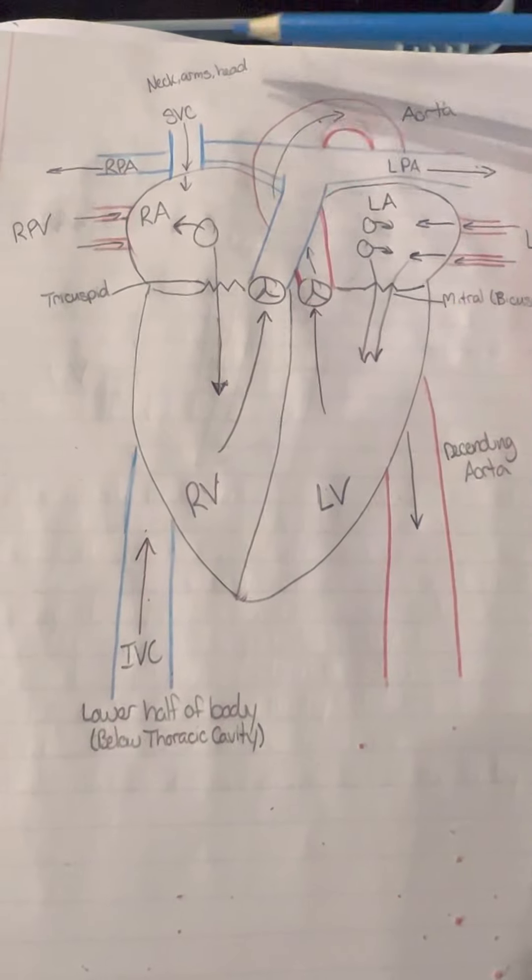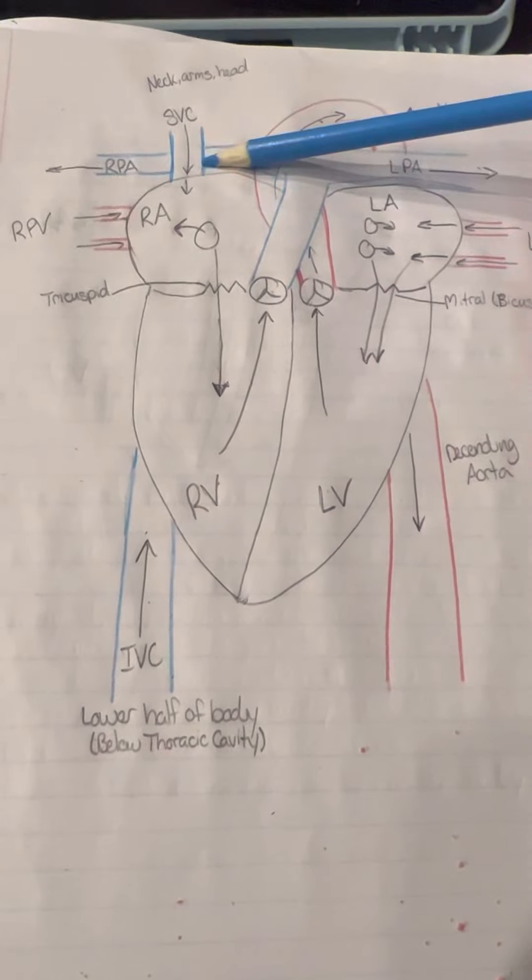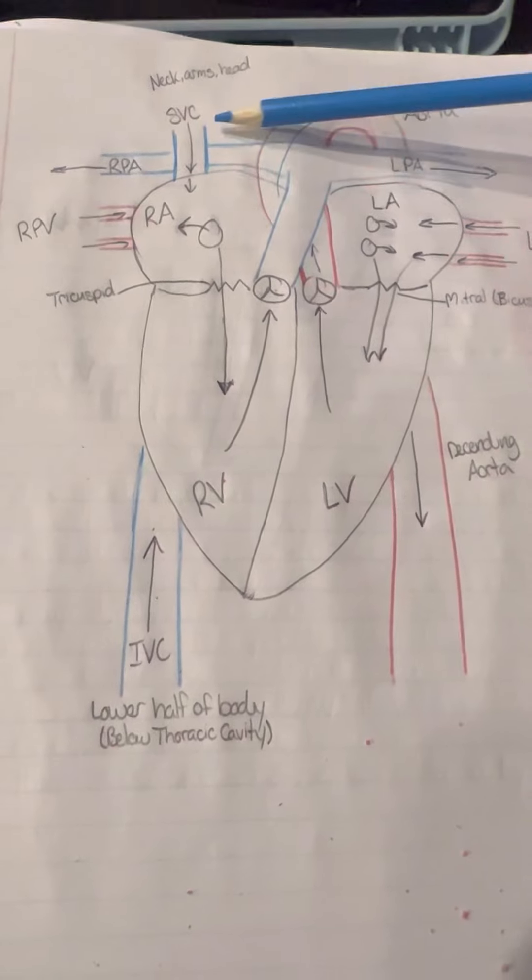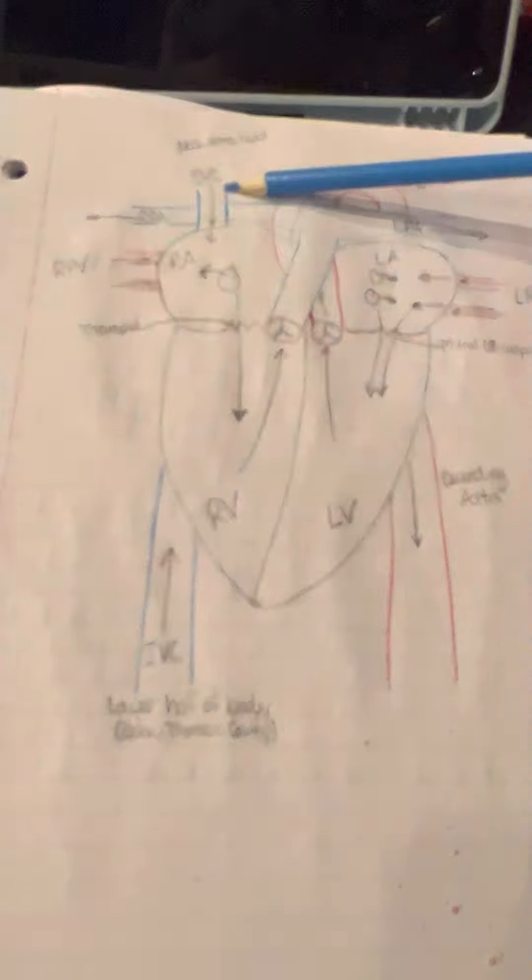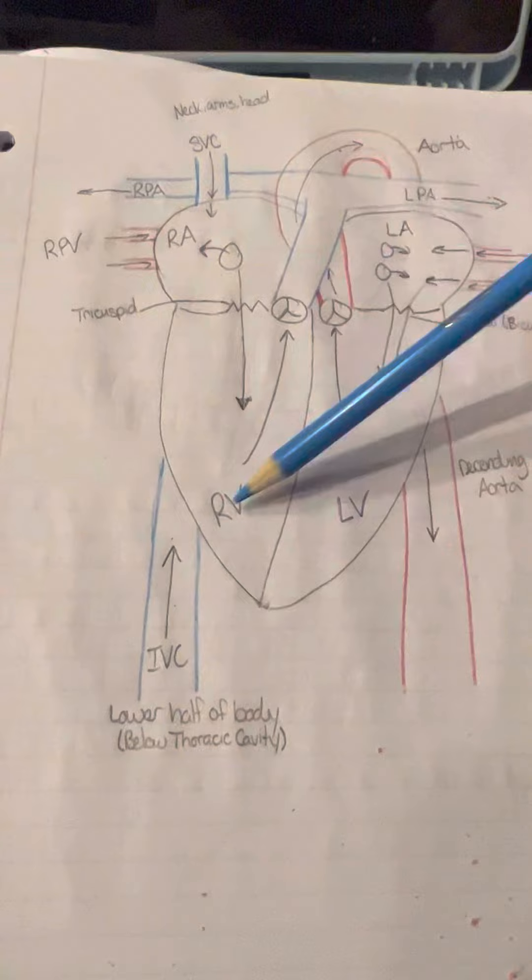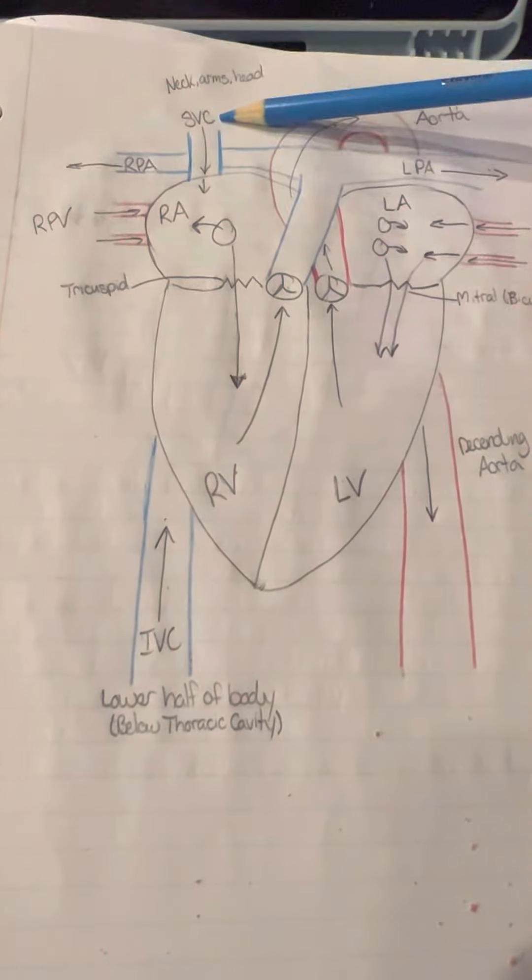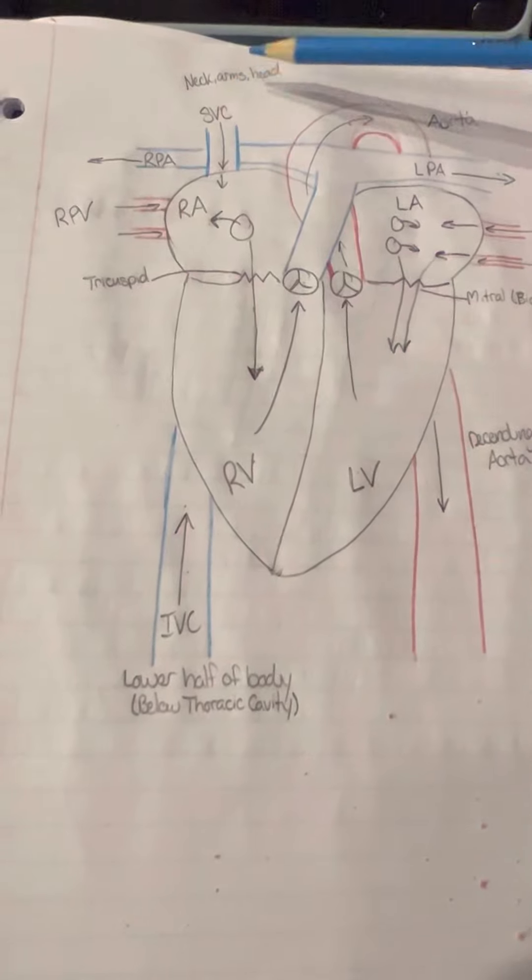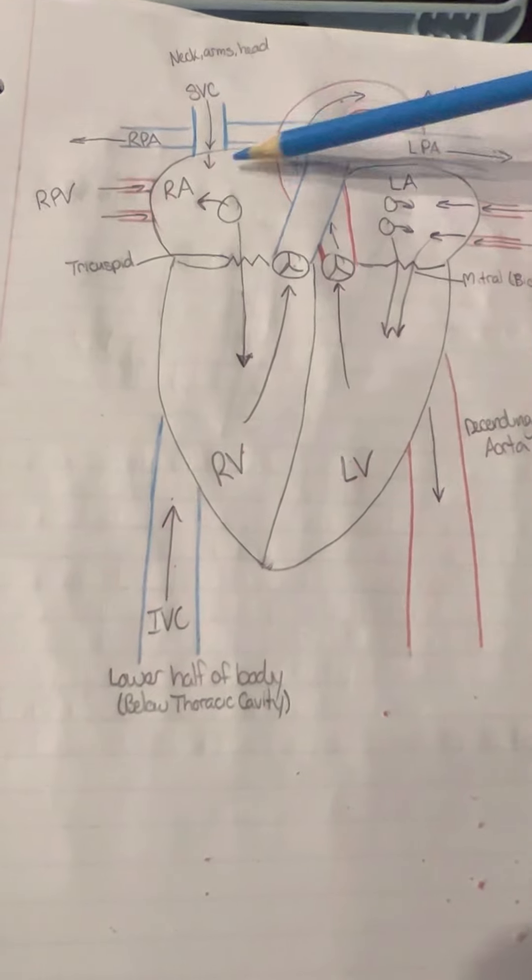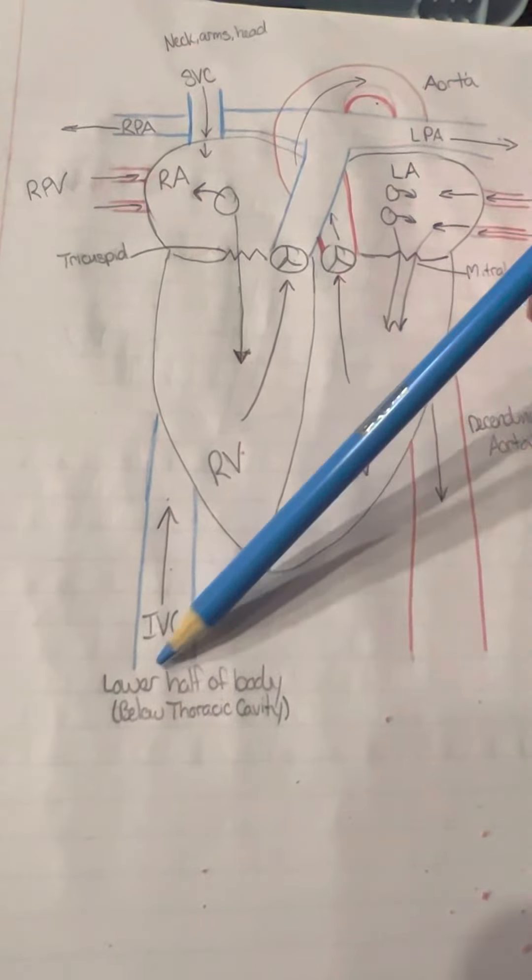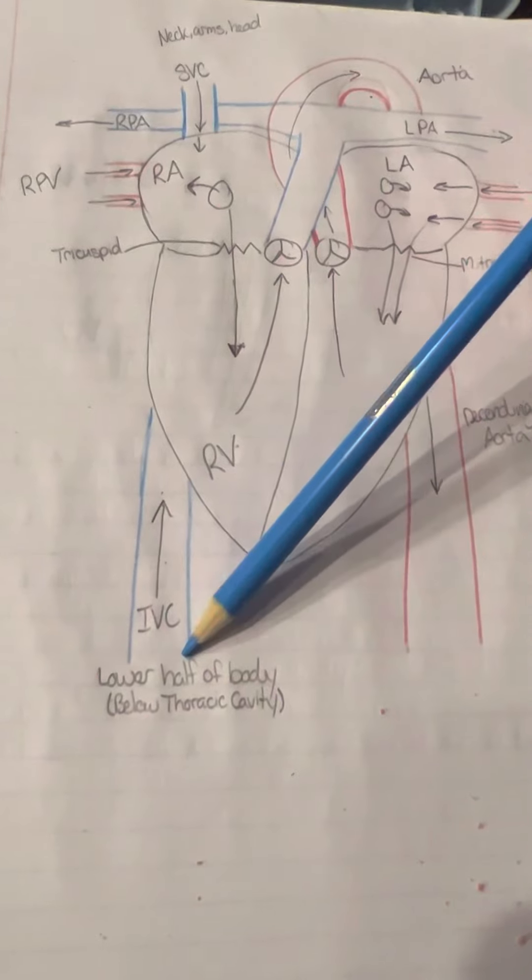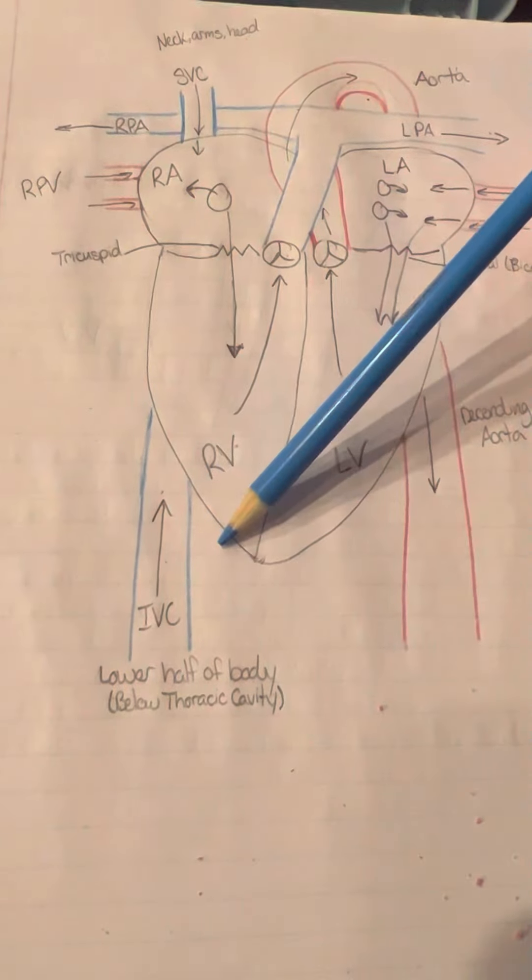Starting off with blood flow, deoxygenated blood comes in through the superior vena cava and the inferior vena cava. The superior vena cava is where blood from your neck, arms, and head will drain into, and then the lower half of the body, like below the thoracic cavity, will come through the inferior vena cava.